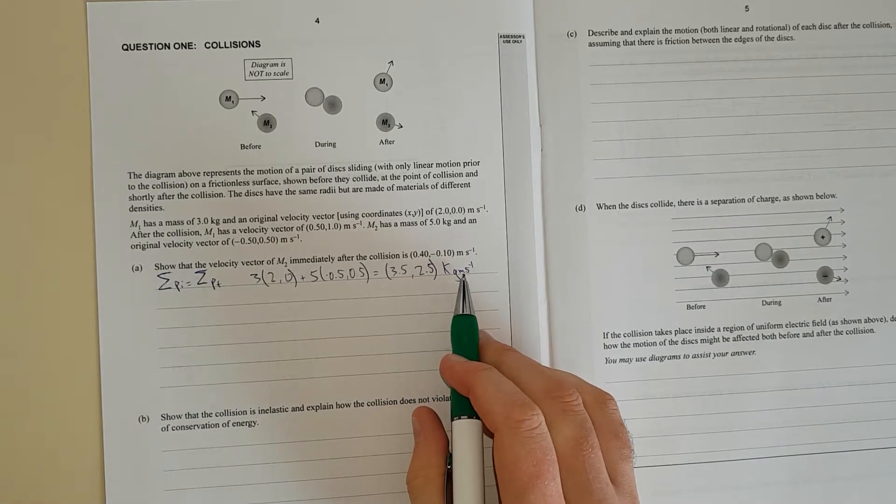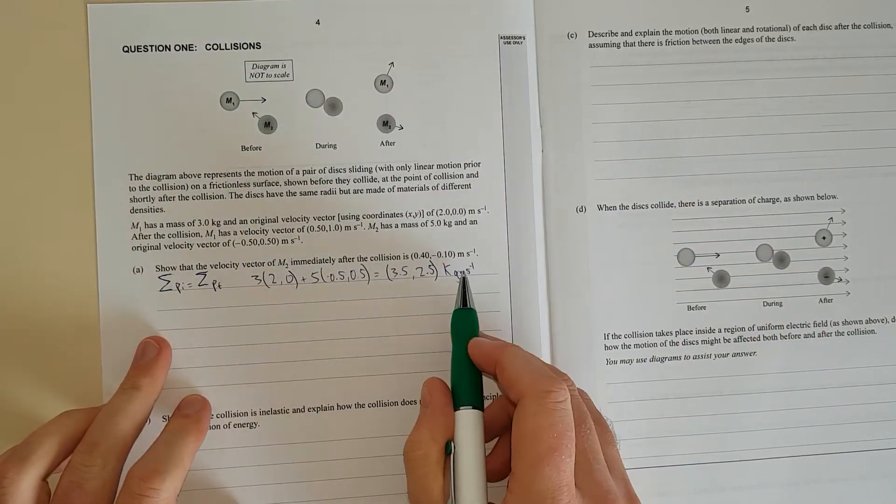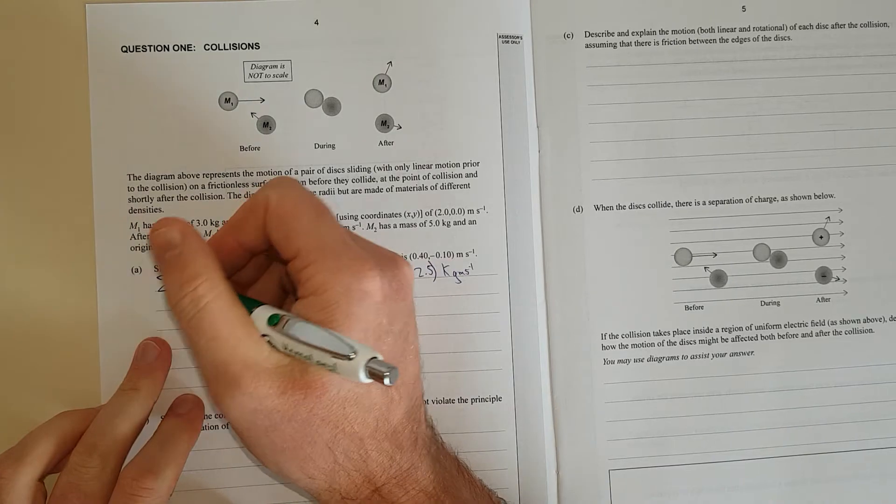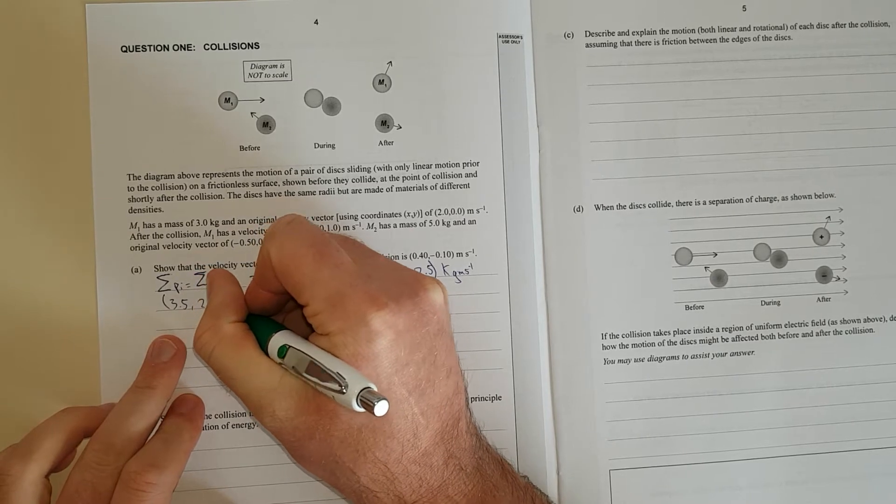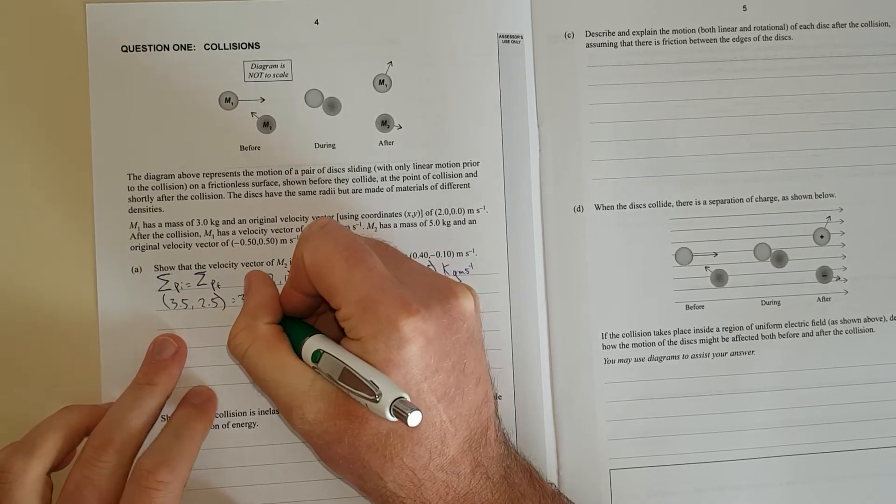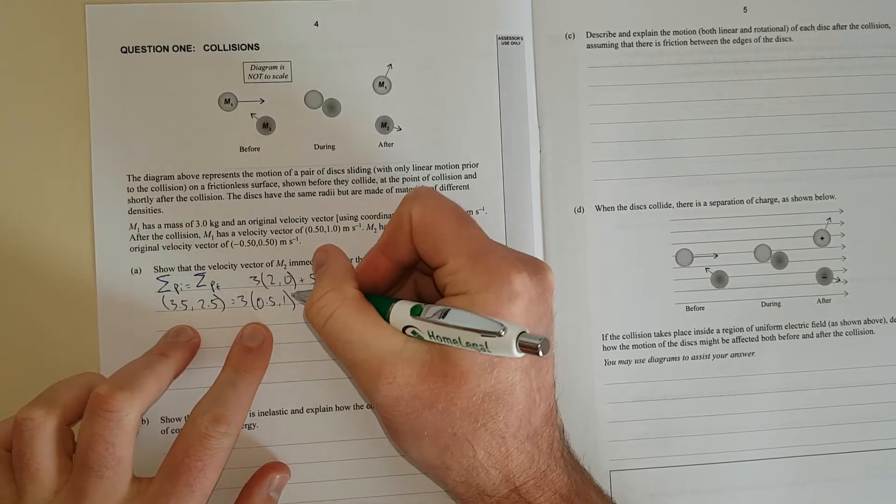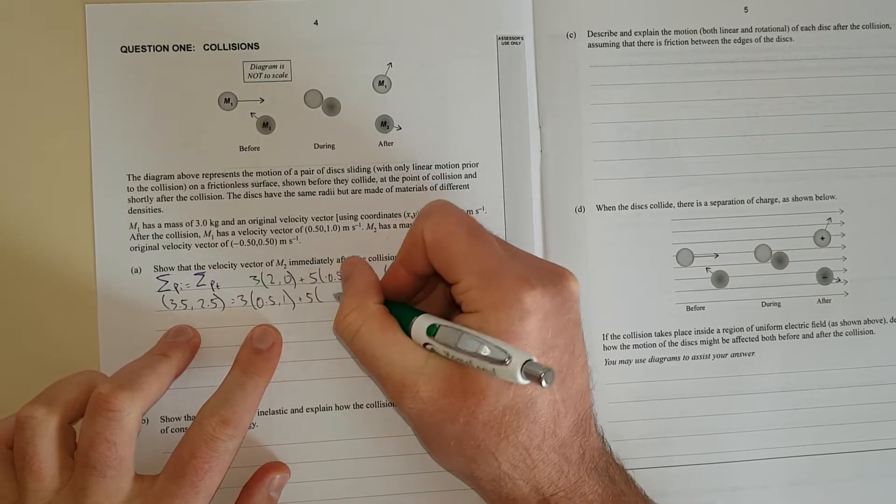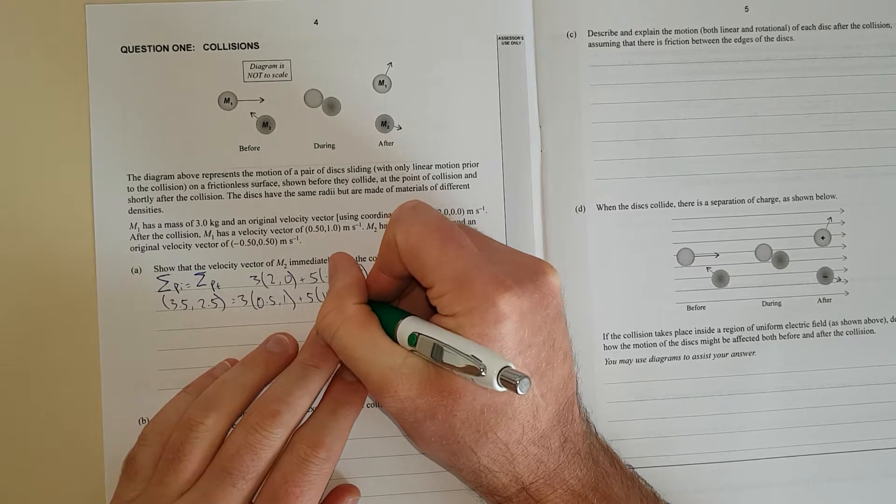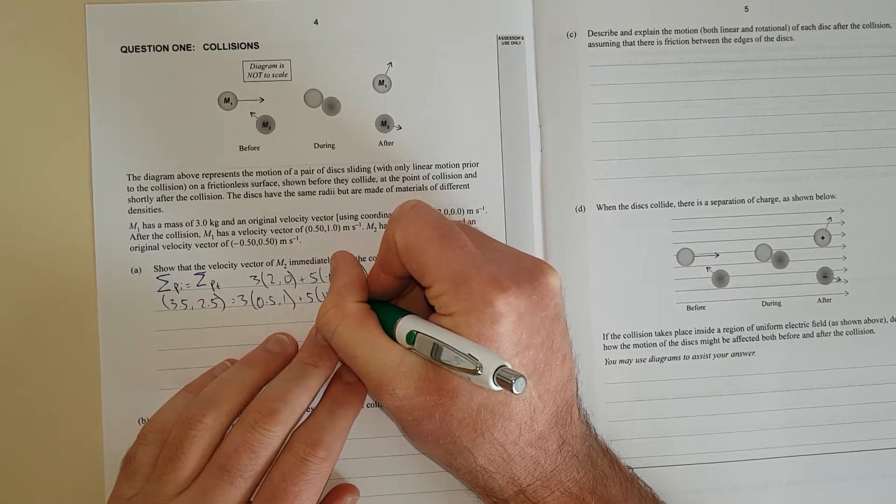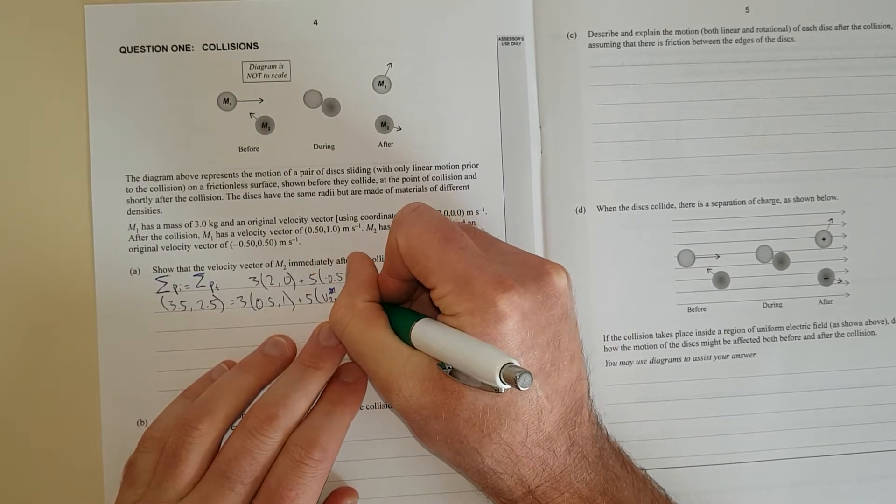That'll be equal to the final momentum vector of the system. And now we do, I'll just put this in the lower column: (3.5, 2.5) equals 3 times the final velocity of M1 (0.5, 1) plus 5 times v2 final. I'm going to label v2 final in the x direction and v2 final in the y direction.